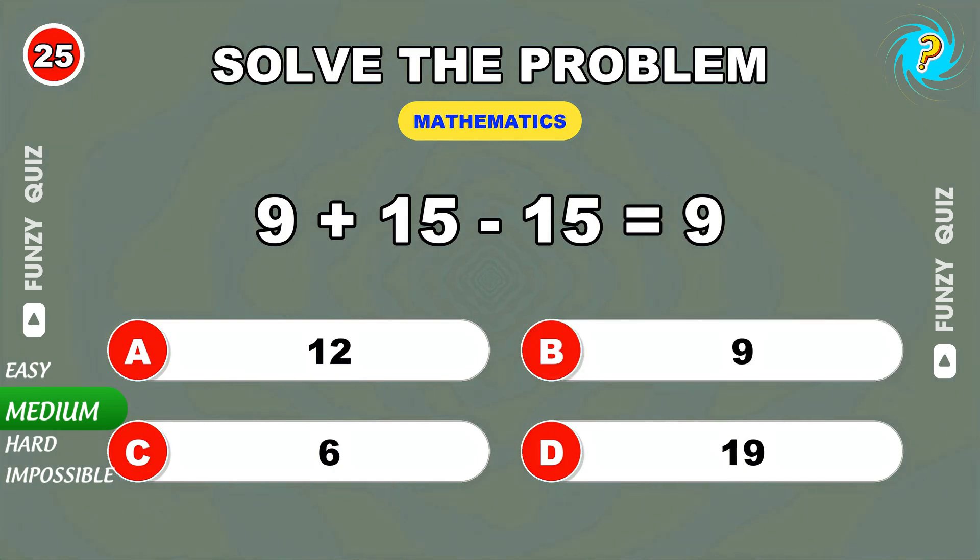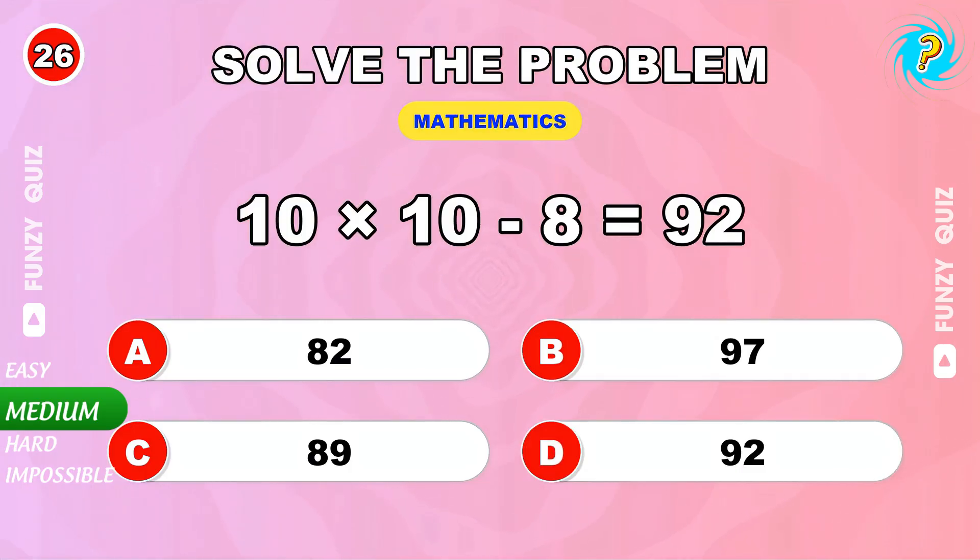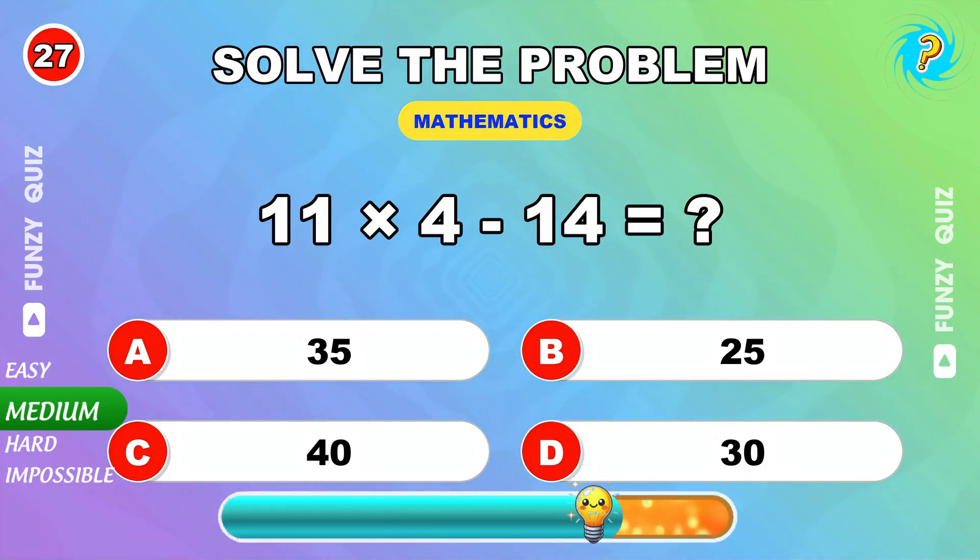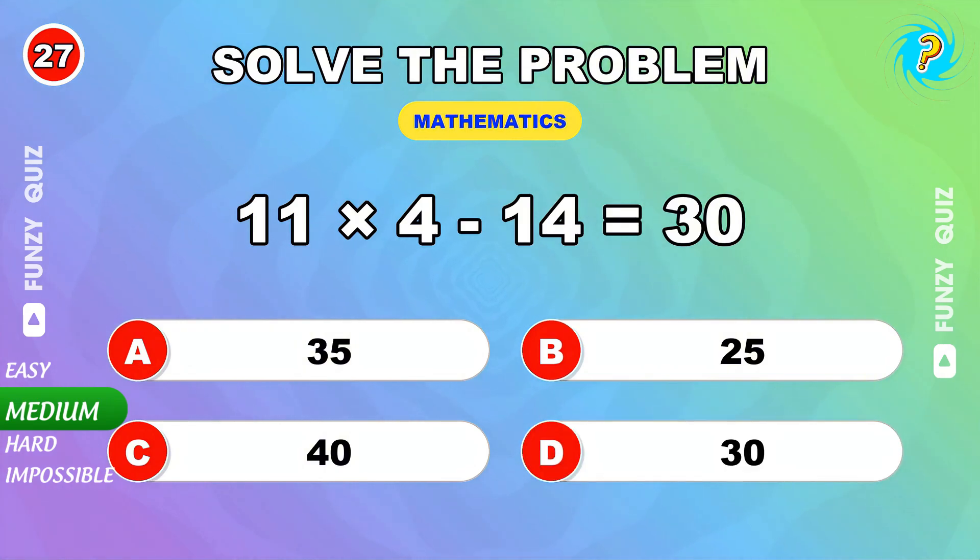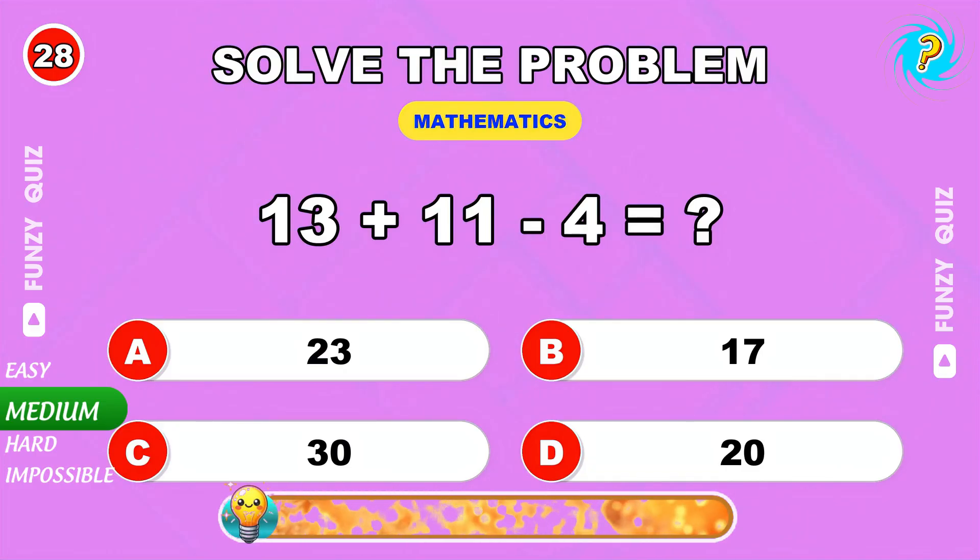32. The answer is 92. 11 times 4 minus 14. 30. 13 plus 11 minus 4. 20.